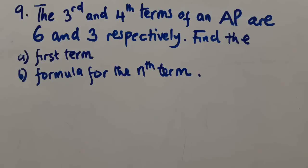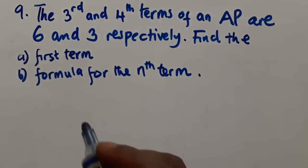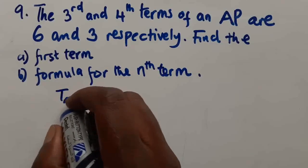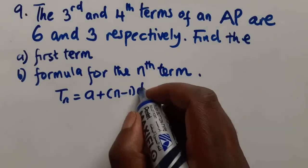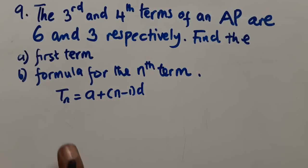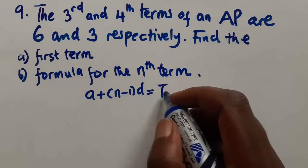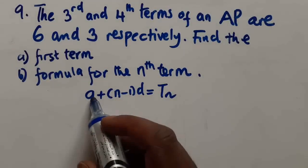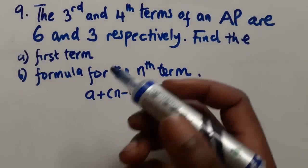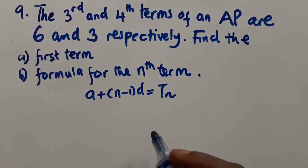Given the third and fourth terms are six and three respectively, find the first term 'a' and find the formula for the nth term. The formula we use to find the nth term of an AP is Tn = a + (n-1)d, where 'a' is the first term, 'n' is the term number, and 'd' is the common difference.